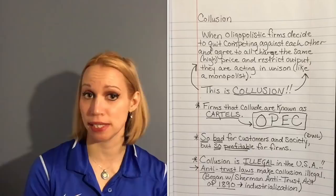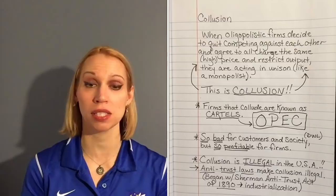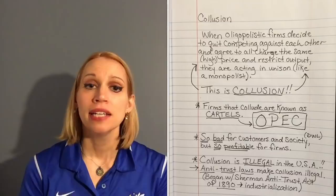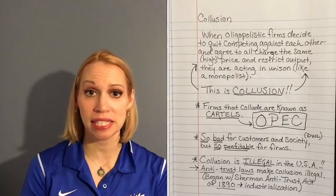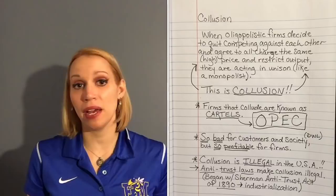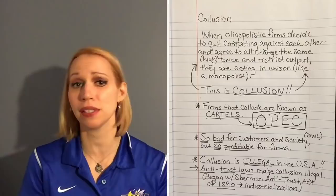It's illegal for firms to do this in the United States. We have antitrust laws established in the late 1800s, around the time of industrialization, that tried to keep markets more competitive and prevent a few firms from dominating an industry. This started with the Sherman Antitrust Act of 1890. But collusion is not illegal in other parts of the world, which is why OPEC is allowed to collude — they're not bound by US antitrust laws.